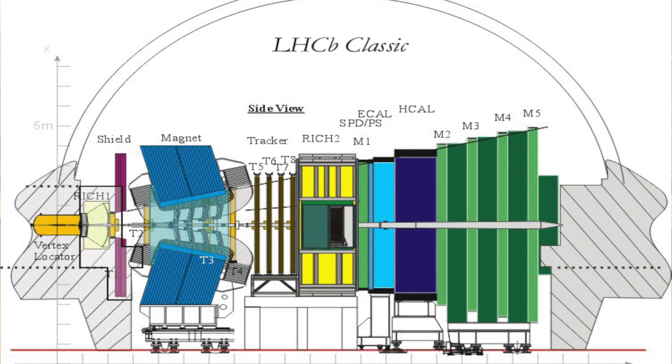A typical particle detector has a layered structure, and each layer performs a specific task. On the inside of a particle detector, typically you'll have these tracking stations, which will track the trajectories of particles.